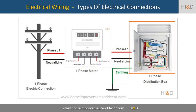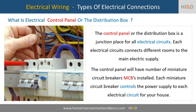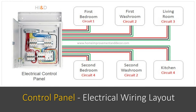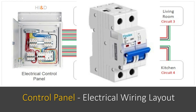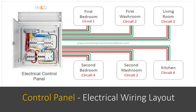Let us now briefly discuss the electrical control panel, also commonly referred to as a distribution box. The control panel or distribution box is a junction place for all electrical circuits. Each electrical circuit connects different rooms to the electric supply. The control panel will have a number of miniature circuit breakers, abbreviated as MCBs, installed. Each miniature circuit breaker controls the power supply to each electrical circuit for your house.